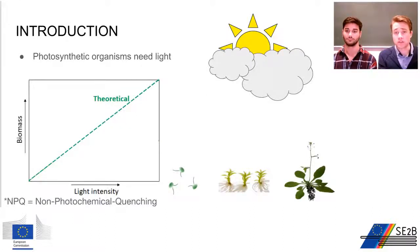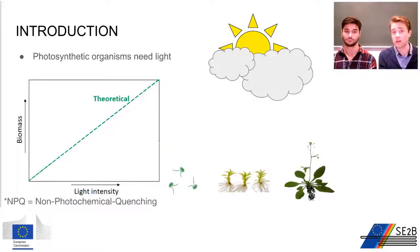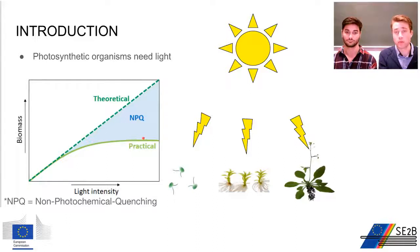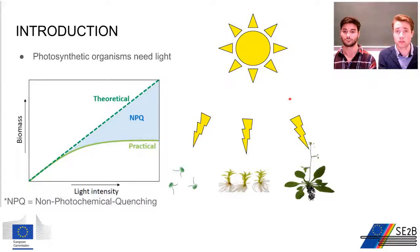Photosynthetic organisms need light for growth and survival, and you would think that the more light you give them the more biomass you would produce. However, this is not the case. Even if we give them more light it doesn't mean we get more biomass — it actually looks more like this, showing the practical amount of biomass produced. This is because of non-photochemical quenching, which is important because too much light can actually be damaging for photosynthetic organisms.